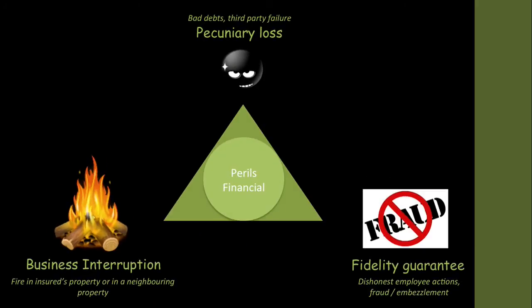The financial loss perils include situations where you make a loan to someone and they don't repay you, or you ask someone to deliver goods and they don't — that's third-party failure, known as pecuniary loss. Then there's fidelity guarantee, which covers fraud and embezzlement — like the Enron situation. And then there's business interruption: if your shop gets burnt down, you can't sell any goods and you lose the future profit you would have made. Macro is a famous example because they're very flammable and business interruption is huge.